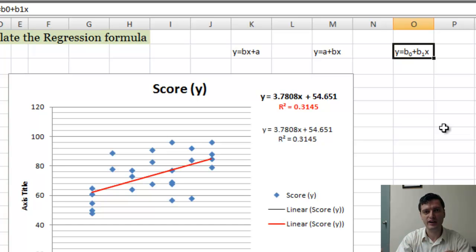So, for example, for one unit increase in hours, for one hour increase in study, what is the amount of increase or decrease in general change in the score. In this case, 3.78 is a positive change, so it's an increase of 3.78 points in the score.